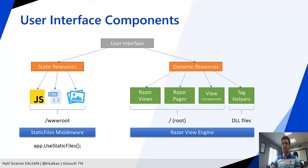On the other hand, dynamic resources consist of Razor Views, Razor Pages, and View Components. They are also located under the root folder of the web project. Dynamic resources are handled by the Razor View Engine. The Razor View Engine executes, compiles, and produces the result of views as HTML output and sends it to the browser on request.